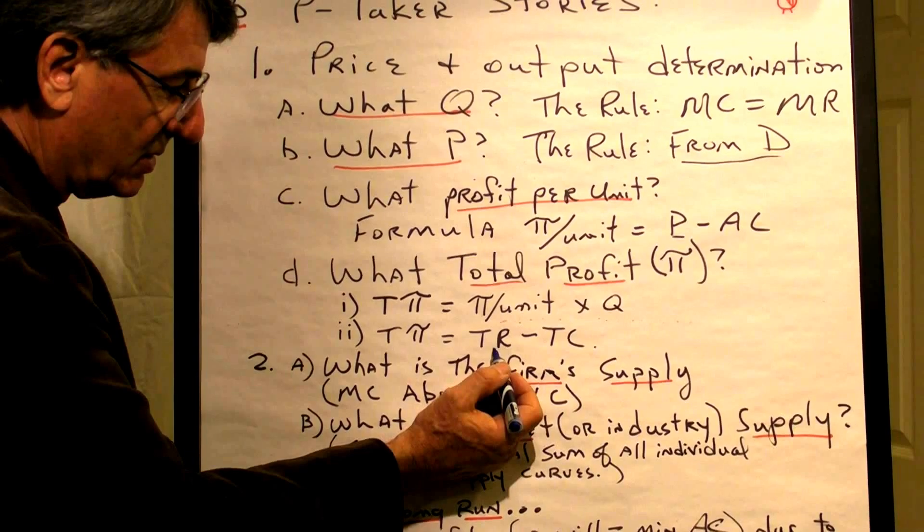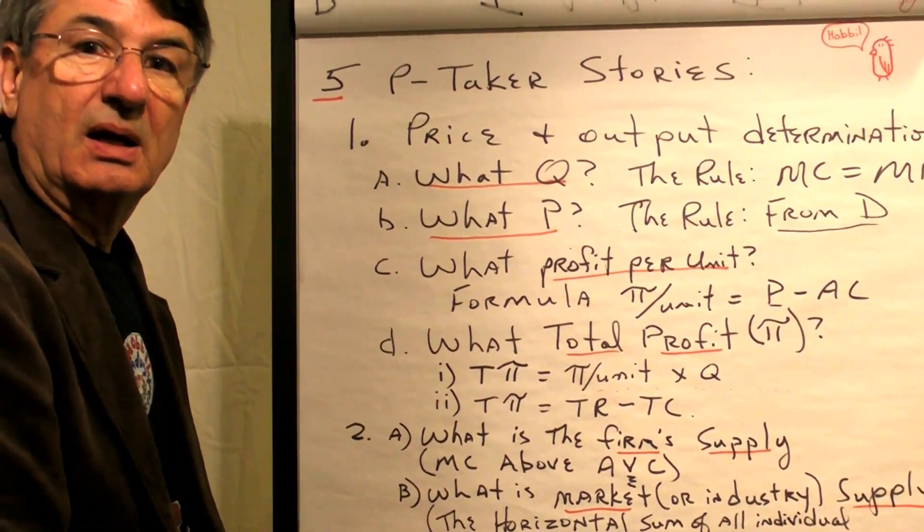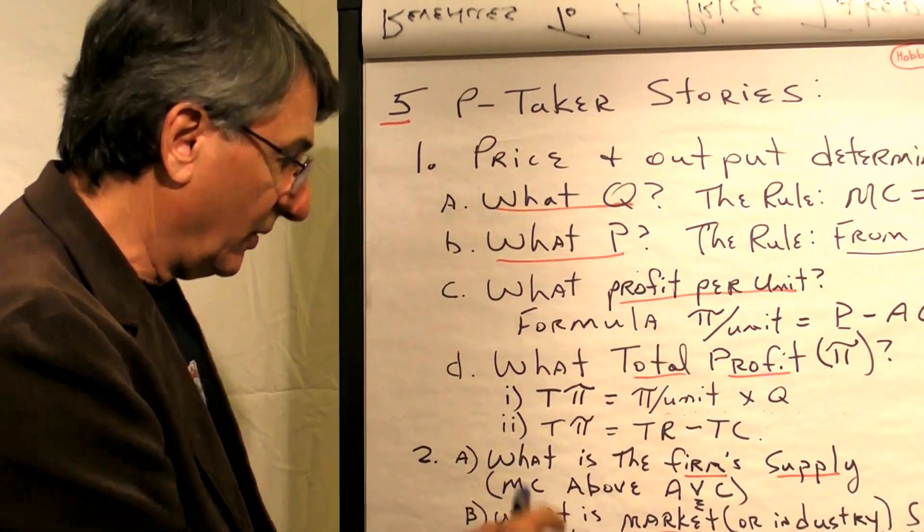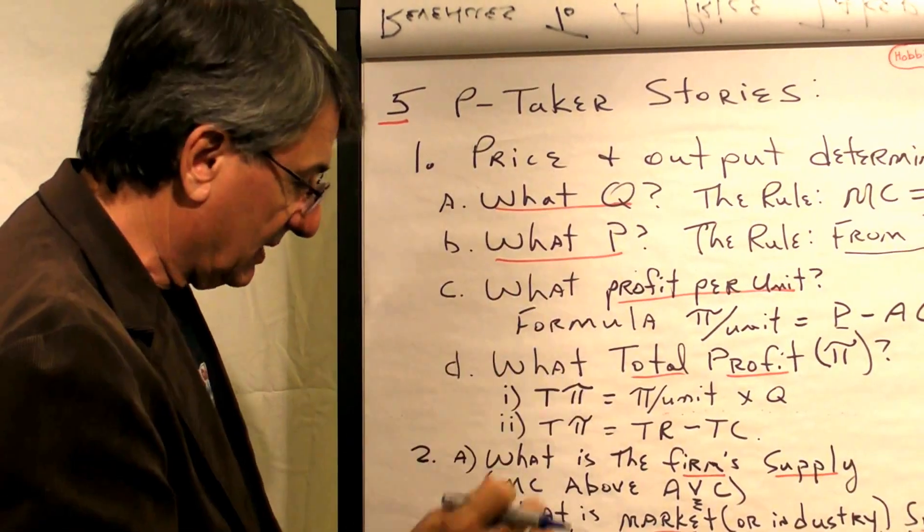Or, if you can get total revenue and total cost easier, you simply subtract total cost from total revenue, and that will give you your total profit. So that's the first one, and we'll do that in the next video.